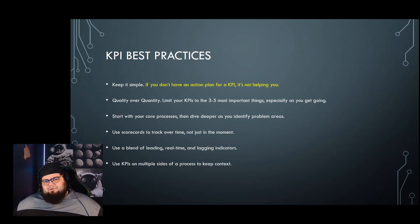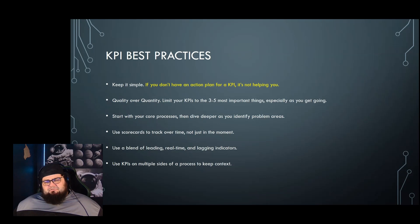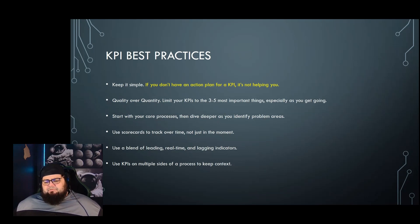Start with high-level stuff. People often want to drill into very specific measurables, but you should start with your core processes, measure fundamentals, and make sure those are the areas actually failing. Look at your processes as a whole, find good measurement points, and figure out if that's what will actually move you forward. Use scorecards to track things over time — don't just look at snapshots. You want to see trends in your data, whether you're trending in the correct direction. And use a blend of leading, lagging, and real-time indicators, since they all have pros and cons and you generally need a mix of the three.